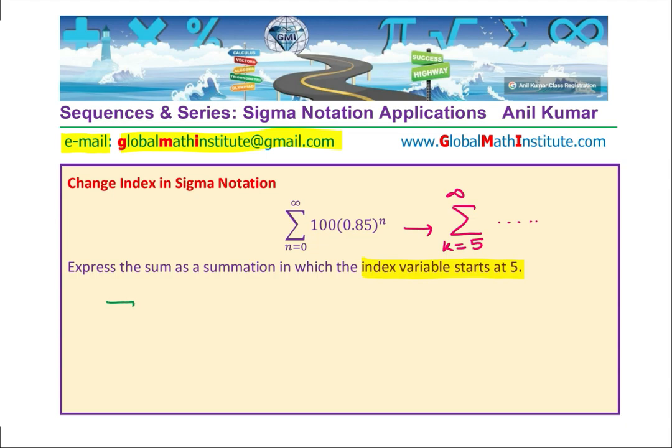So, we know that this dummy variable, we can change, make it k. So, k is starting at 5 and definitely will go up to infinity. So, we need to now figure out what should be f of k, the expression inside. So, what do you notice here? So, now, you can see that as we did in the last time, how is this n related with this k?